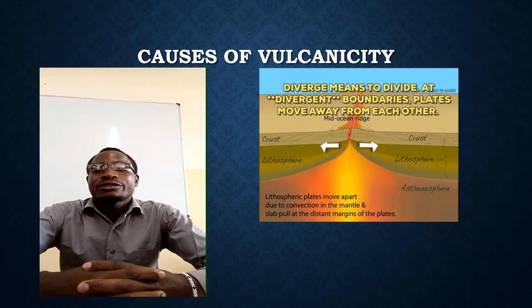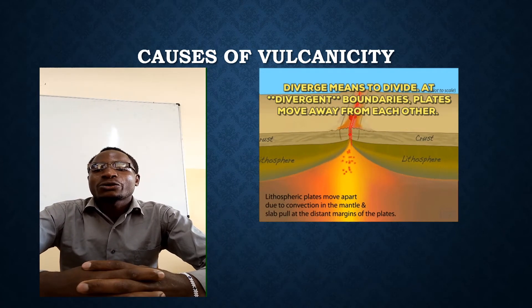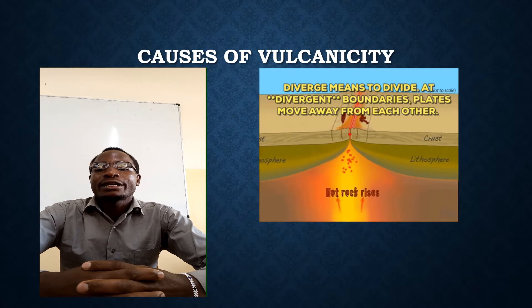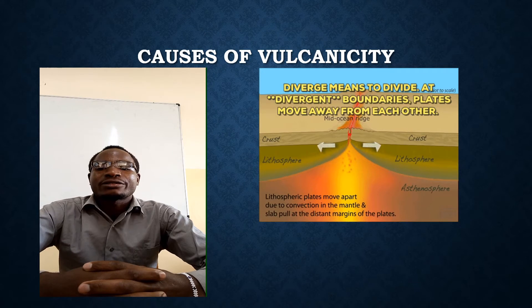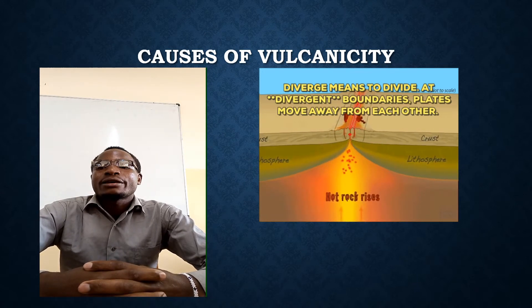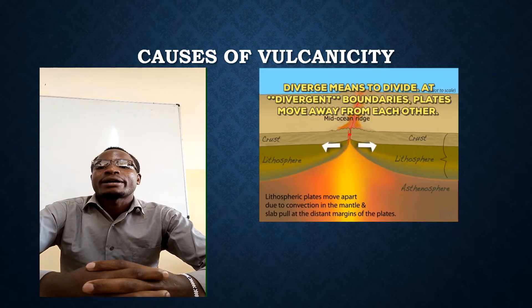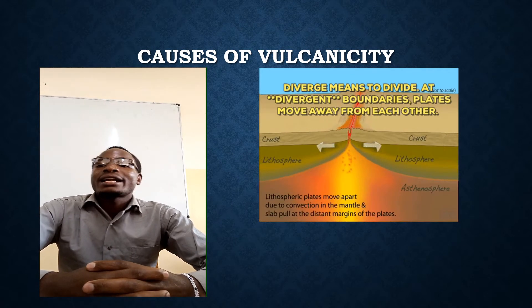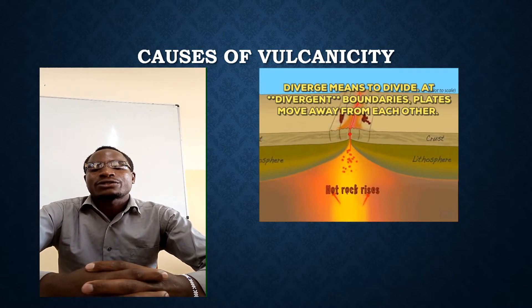The next item is the causes of vulcanicity. The first one is that underground water coming into contact with hot materials changes into gaseous form. The next one is when tectonic plates move away from each other and boundaries give way to the magma. Lastly, magma under high pressure and temperature moving through the lines of weakness or faults.